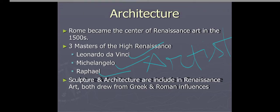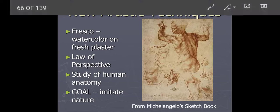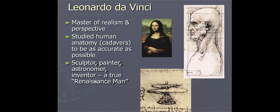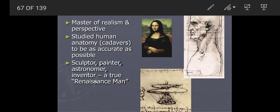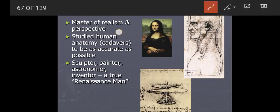New artist techniques included fresco — watercolor on fresh plaster. They also used the law of perspective and the study of human anatomy. Their goal was to imitate nature — to properly represent nature through their paintings. Leonardo da Vinci was a master of realism and perspective. He is still very famous today for his painting, the Mona Lisa. He studied human anatomy to be as accurate as possible.